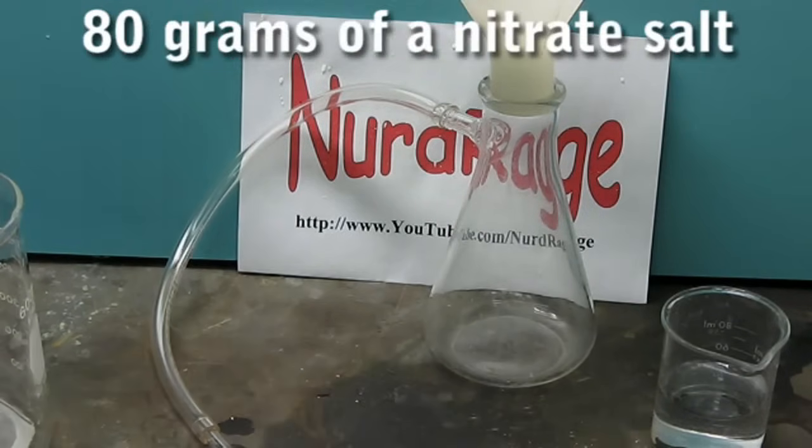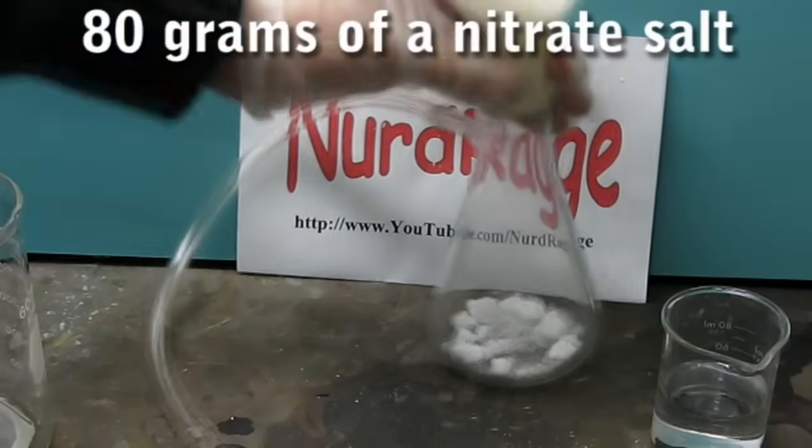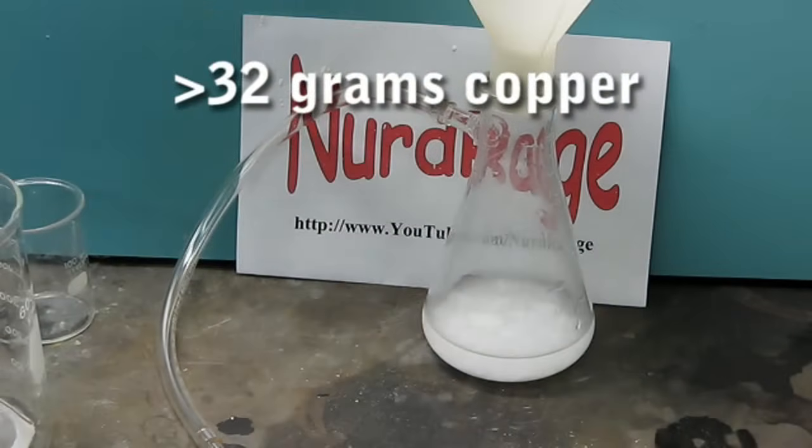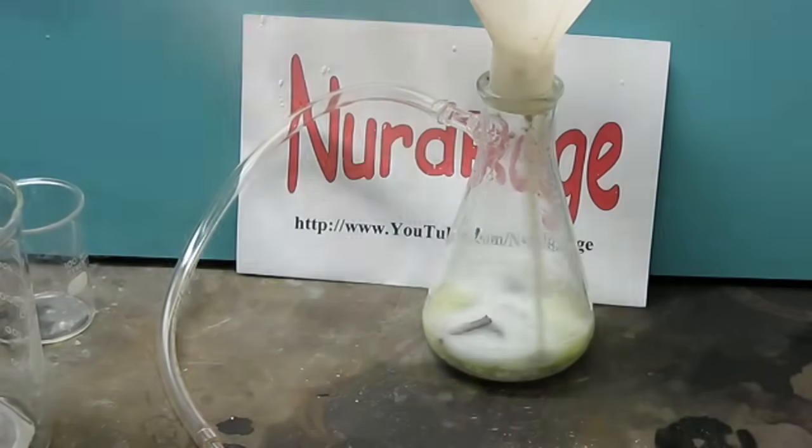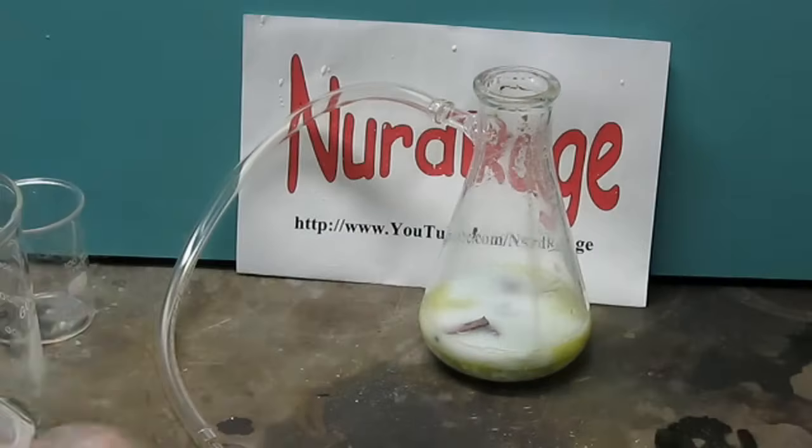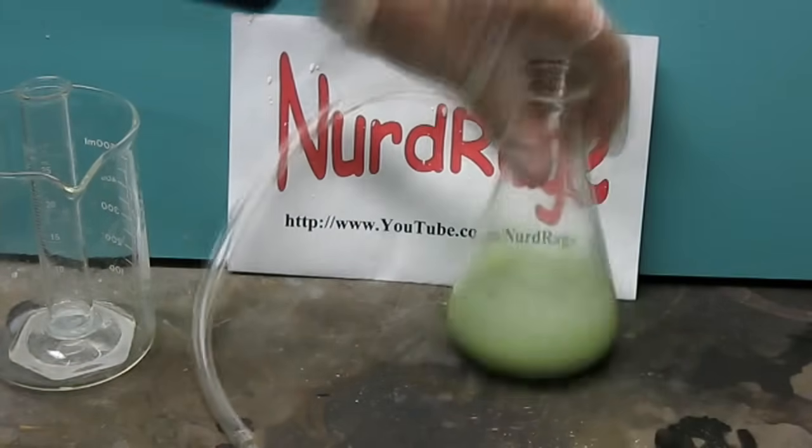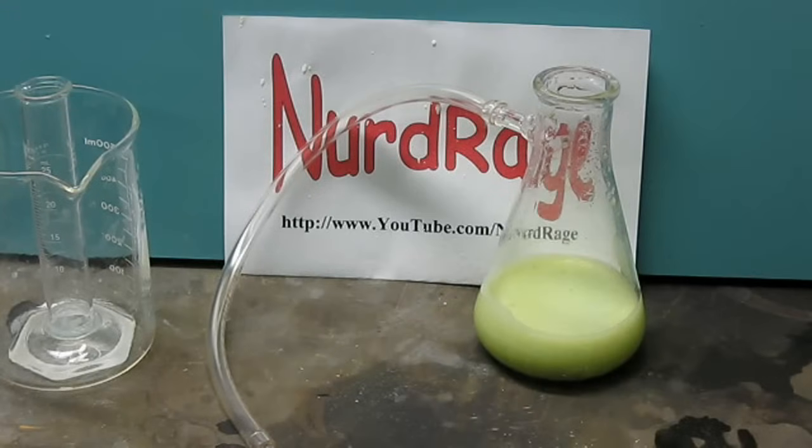Now fill the flask with 80 grams of nitrates just like before. Then add 50 milliliters of water and at least 32 grams of copper. Do not add the hydrochloric acid yet. Our mixture in the video is turning green because we use recycled copper waste from our lab. If you use clean copper this shouldn't happen.